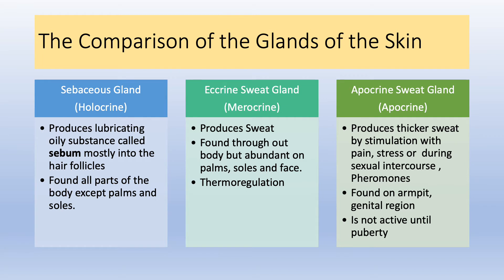Apocrine sweat gland does an apocrine type of secretion — that means they release their sweat, products, and pheromones via exocytosis. At the same time, they also release some part of the cells along with the product. They produce a thicker sweat stimulated by pain, stress, or during sexual intercourse. They are found in the armpit and genital region, and they are not active until puberty.